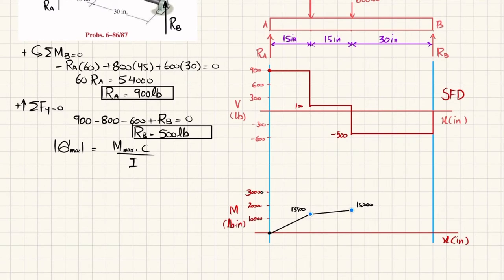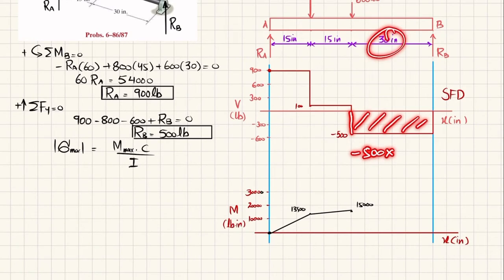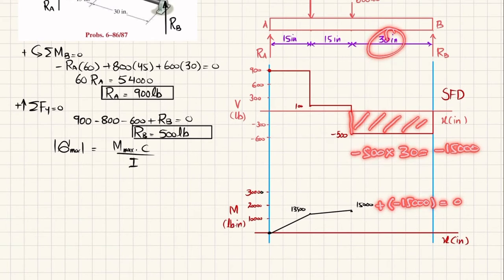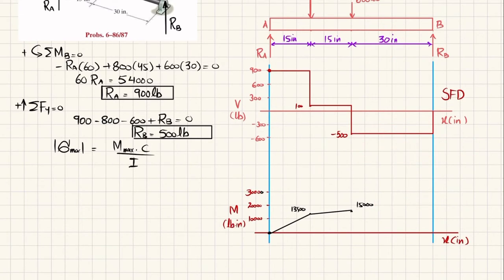At that location we have 15,000 pound-inches. The shear force is again a horizontal line, so the bending moment increases linearly to this value. The third area under the shear force diagram has height minus 500 and length 30, equal to minus 15,000. So 15,000 minus 15,000 brings it to zero. The slope is decreasing and it is a linear line, completing the bending moment diagram.